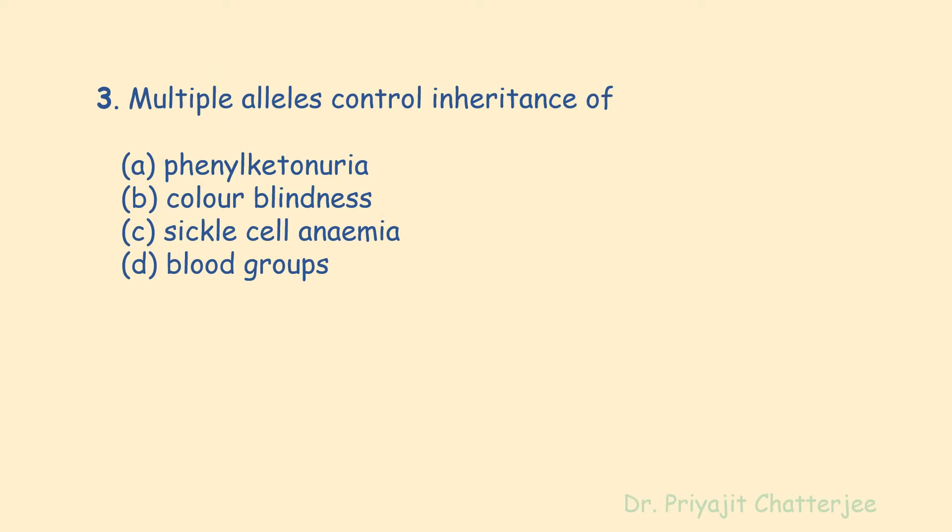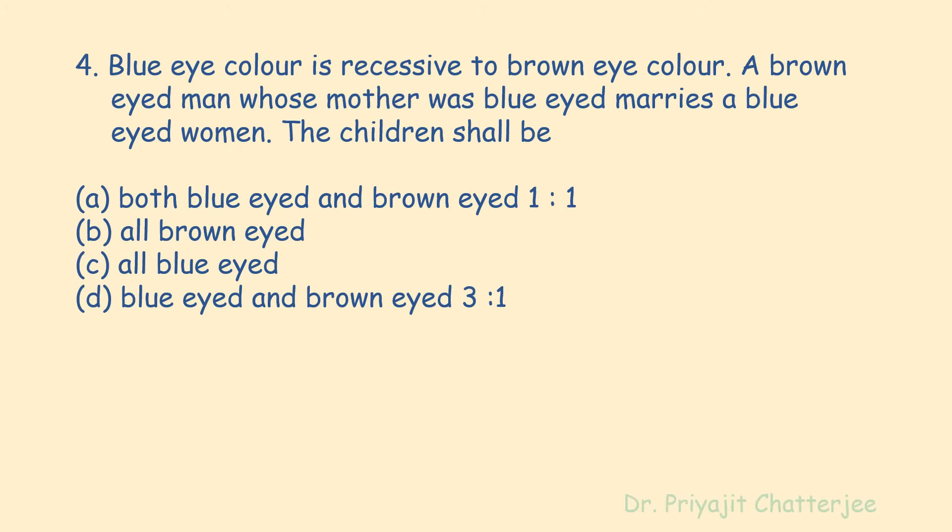The third question: multiple alleles control inheritance of — options are phenylketonuria, colorblindness, sickle cell anemia, and blood groups. The correct answer is blood groups. Genes that have more than two alternative forms are called multiple alleles; they are present on the same locus on homologous chromosomes and can be detected only in a population. For example, blood groups in human beings.